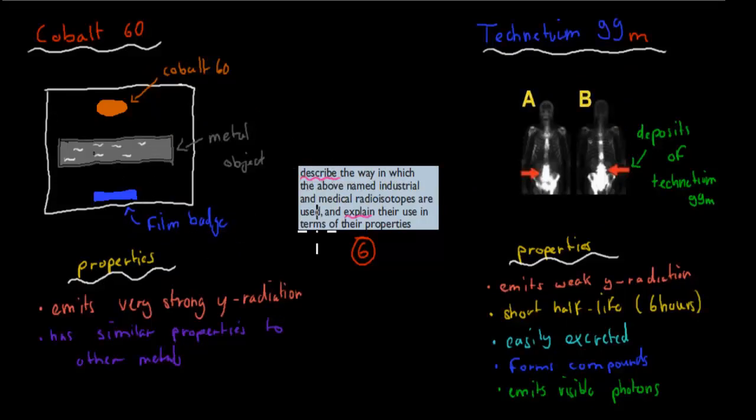Now we have to describe the way in which these are used and explain their uses in terms of properties. We said that, for example, Cobalt-60 was used to be able to identify flaws in metal objects. So here we have our Cobalt-60. Cobalt-60 emits gamma radiation. You can imagine these white bits to be our flaws. If there were no flaws, like if they're here, there are no flaws, then the actual thing could penetrate, wouldn't be able to pass. But if there are flaws, they can penetrate all the way through.